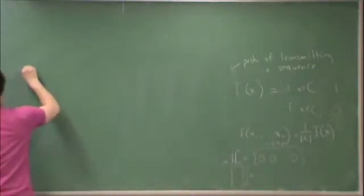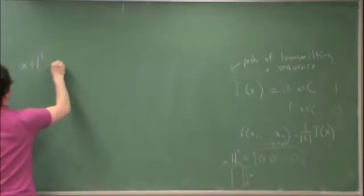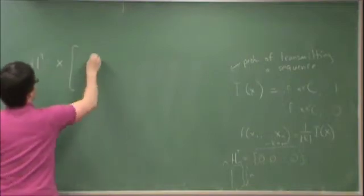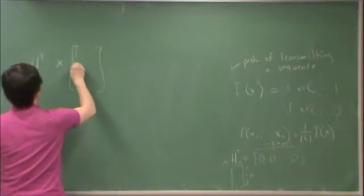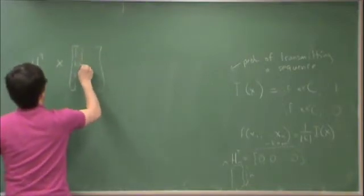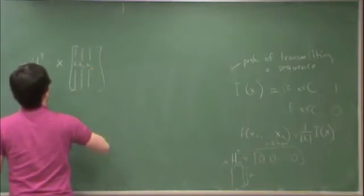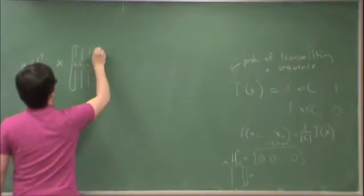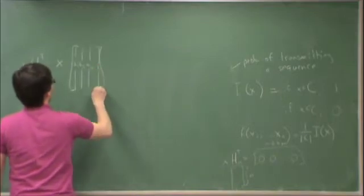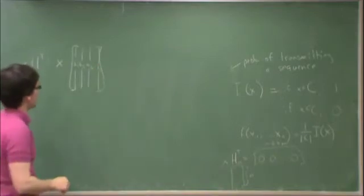So x H transpose is equal to x times, let's call these H1, H2, H3, and so on, up to Hm. These are the columns of H transpose.